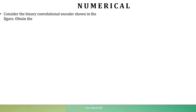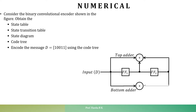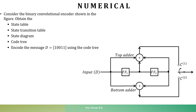Let us consider the binary convolutional encoder figure shown below and obtain the state table, state transition table, state diagram, the code tree, and encode the message d equal to 10011 using the code tree. We have already solved the state table, the state transition table, and the state diagram in the previous video. The link can be found in the description below. In this tutorial, we are going to learn about the code tree and encode the message d equal to 10011 using the code tree.